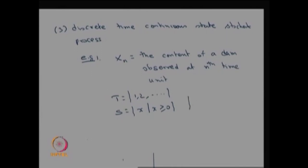Therefore, the parameter space is discrete whereas the state space is continuous. This stochastic process {X_n, n = 1, 2, 3, ...} forms a discrete time, continuous state stochastic process.